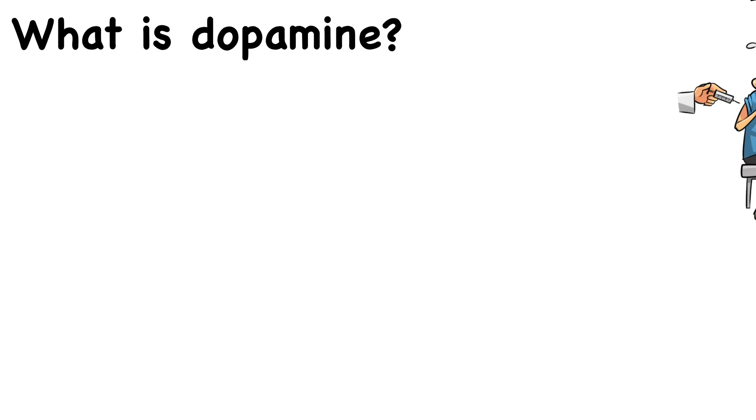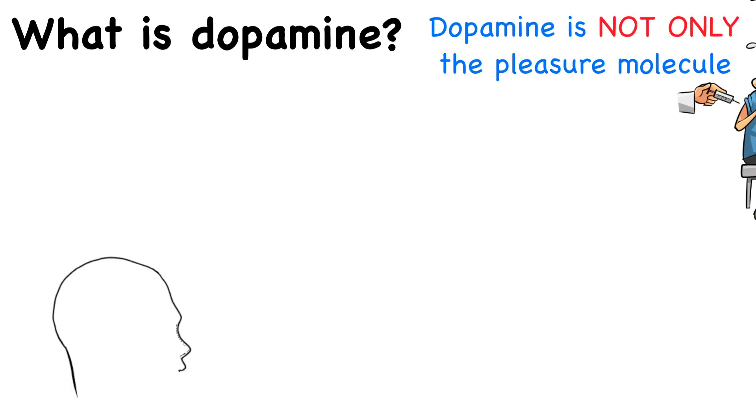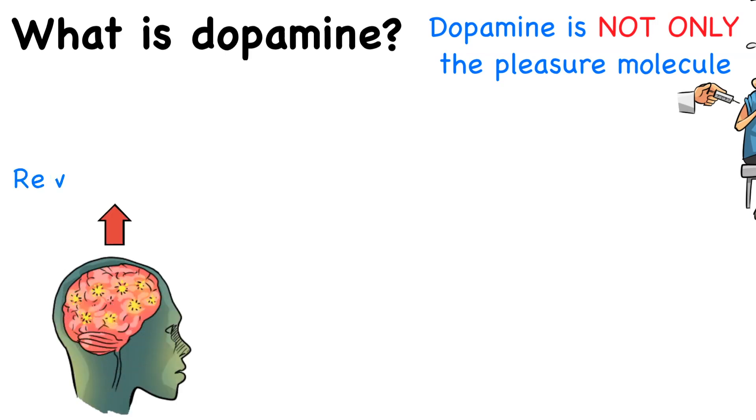What is dopamine? First of all, it's worth noting that dopamine is not only the pleasure molecule. The pathway that dopamine cells take through the brain was named the reward pathway. Therefore, dopamine was referred to as the pleasure molecule, but this is not the entire story.